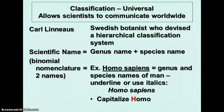For example, humans are known as Homo sapiens — those are the genus and species names of our species. When you write a scientific name, it's important that you do it correctly. You need to underline or use italics for the genus and species name, and the genus name needs to be capitalized. So if you're writing it, you should underline the scientific name.